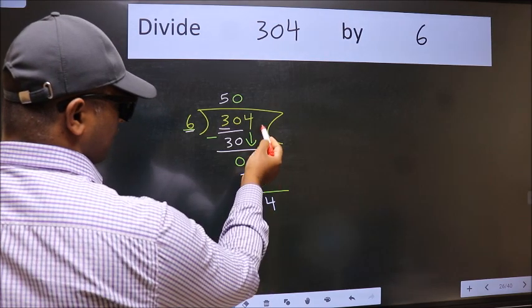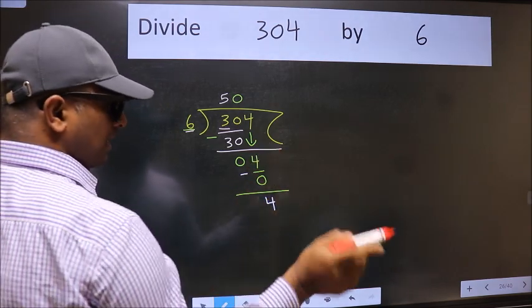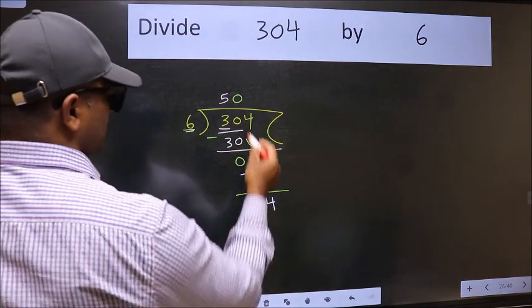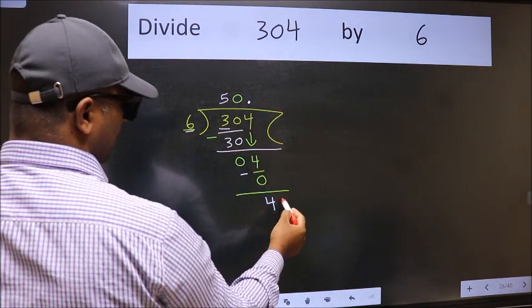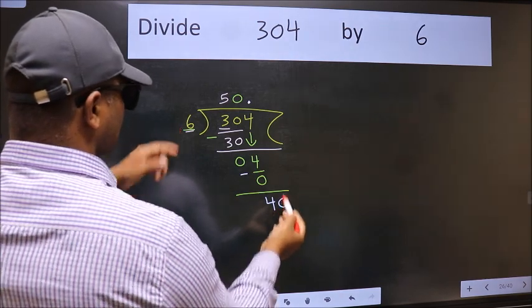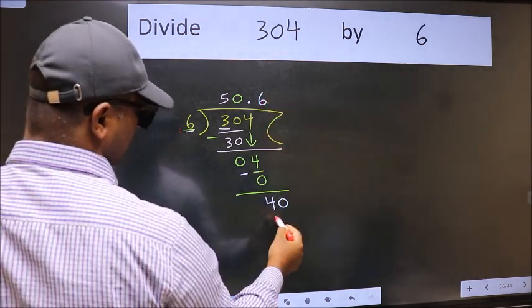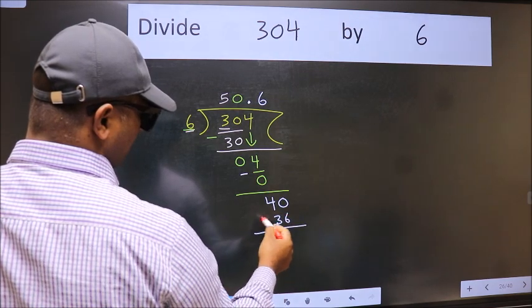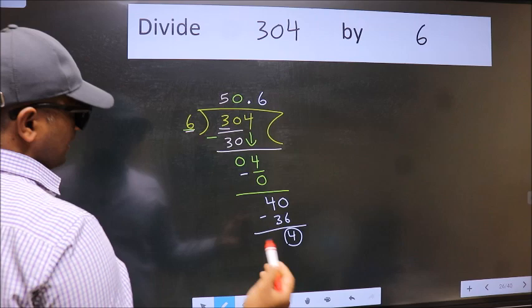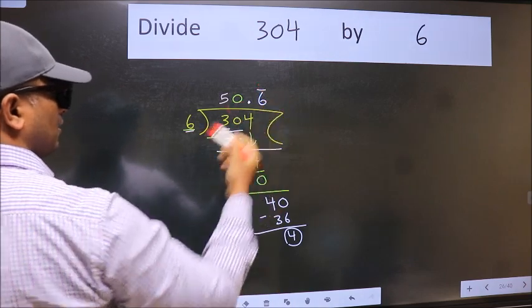Over here, we did not bring any number down, and 4 is smaller than 6. So now we can put a dot and take 0. So 40. A number close to 40 in the 6 table is 36: 6 times 6 is 36. Now we subtract. We got 4 again, which means we get a bar on this number.